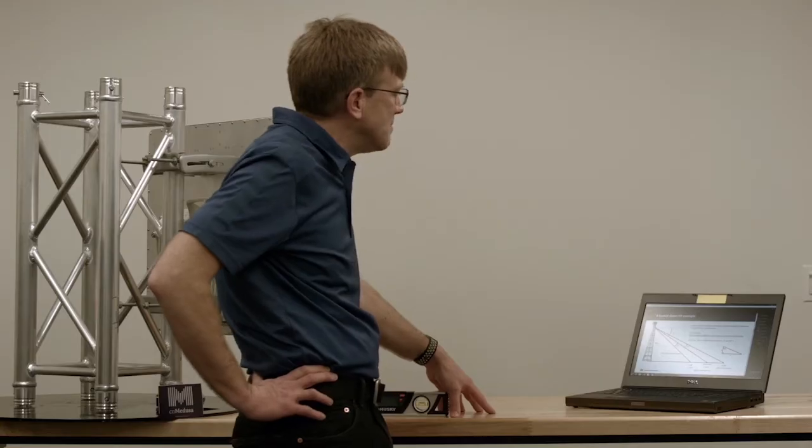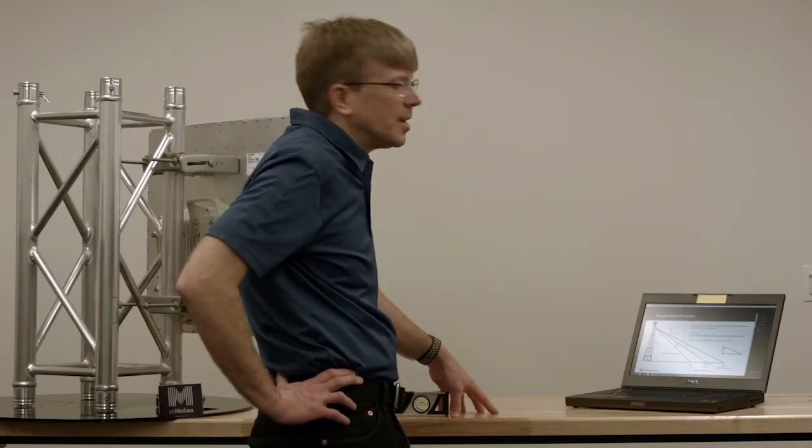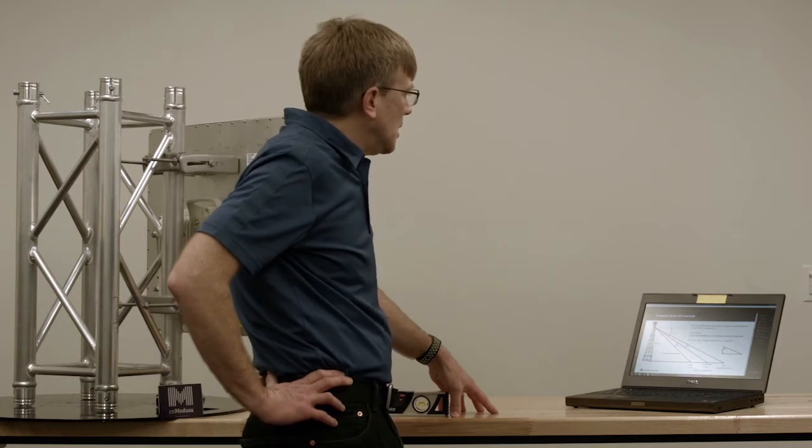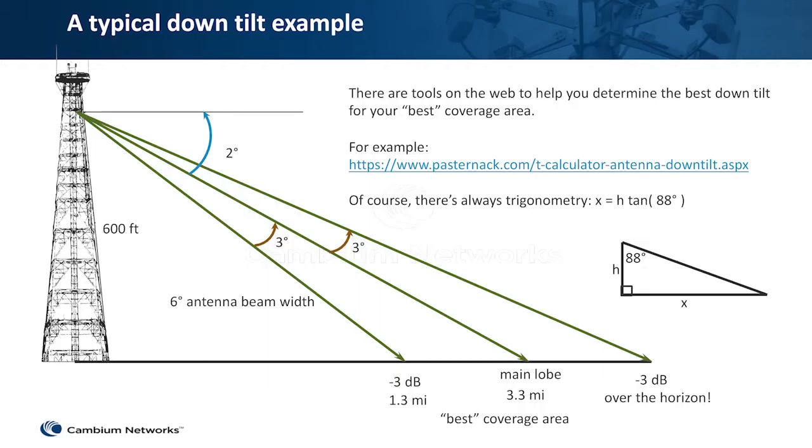So again, we're trying to place the main lobe in the area where you want the best coverage. Typically, you're going to have 2 degrees of down tilt. Link planner will tell you how much down tilt you need.